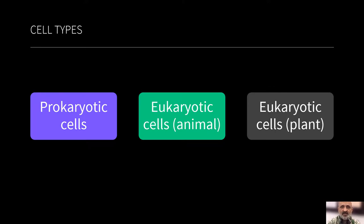From yeast, we transition to the higher eukaryotes, which are the animal cells, which are now differentiated, and the plant cells, which are differentiated from animal cells by virtue of their cell wall.